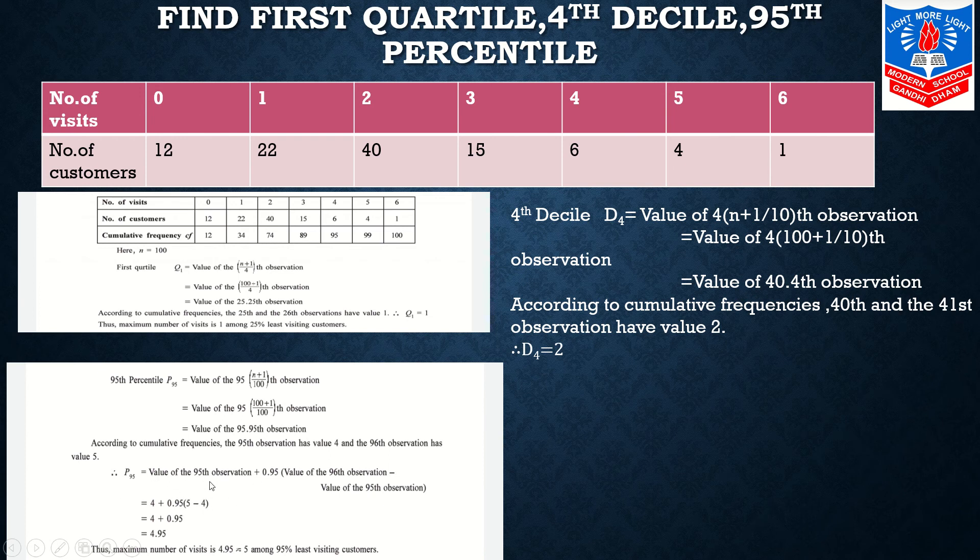Now 4th decile. The calculation is: 4(N+1)/10th observation. N is 100. Finally we will get 40.4th observation. 40.4th observation we will see in CFI comes under 74. According to cumulative frequencies, 40th and 41st observation has value 2. So D4 is 2.